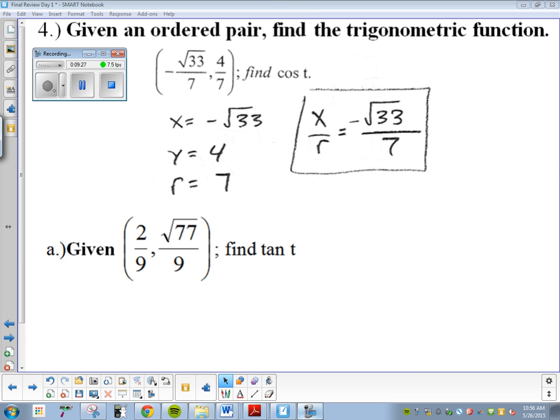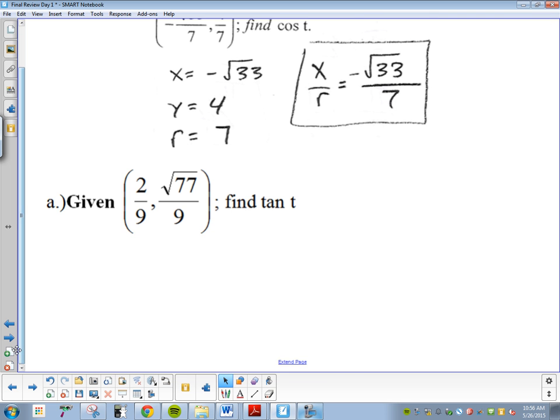Last one on the front side. Given an ordered pair, find the trigonometric function. We did this already in Bellwork. They gave us an ordered pair. We're finding cosine. So we listed x, y, and r and then solved. For this one, given this ordered pair, we're finding tangent. We are finding a trig function. If we're finding a trig function, what's the first thing I should do? x, y, and r.